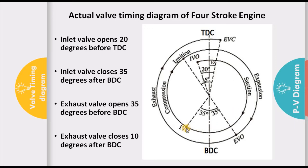After the inlet valve closes, the charge is entrapped and compression starts. Theoretically, the spark was supposed to ignite at TDC, but in actual practice the spark is given at an advanced timing — around 35 degrees before TDC. Therefore, combustion starts before TDC while the piston is still moving towards TDC. The compression stroke happens from inlet valve closing up to the point of ignition.